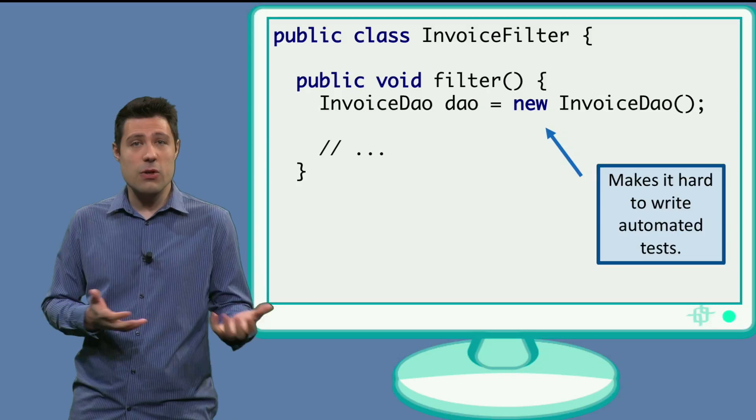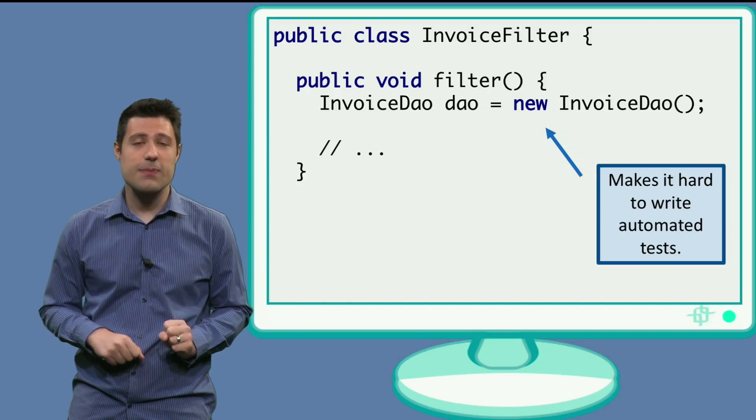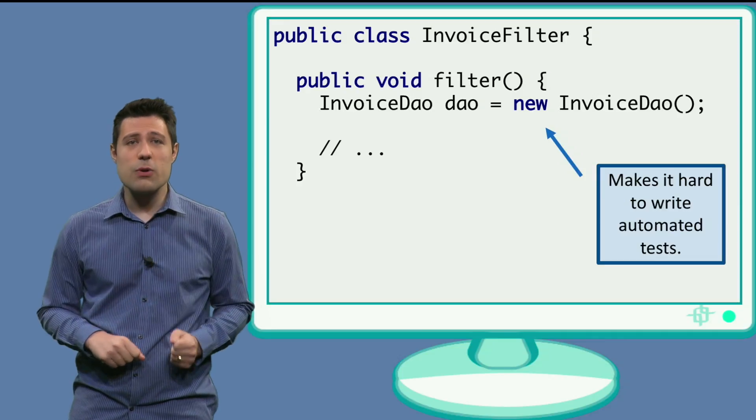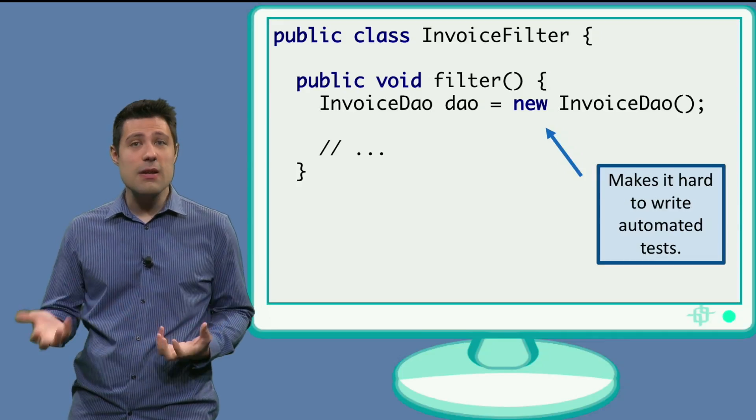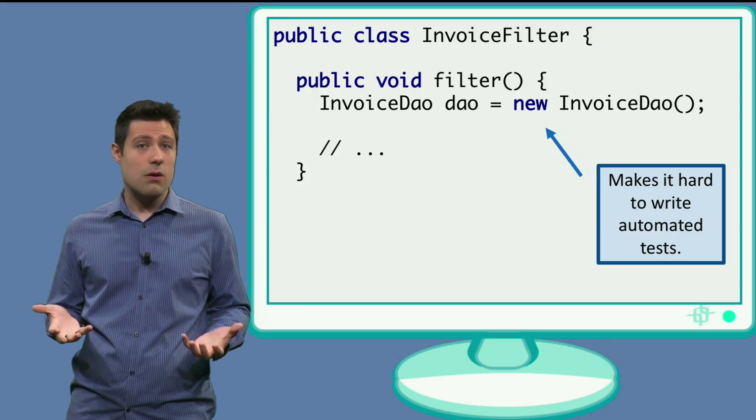In our invoice filter, the very first code was new InvoiceDataAccessObject and then use it. But we saw that this approach wasn't very good from the testability perspective, because we were then not able to replace this object by a mock, which we wanted to.